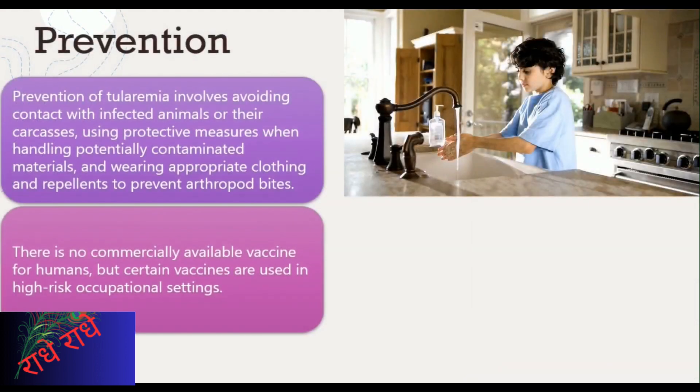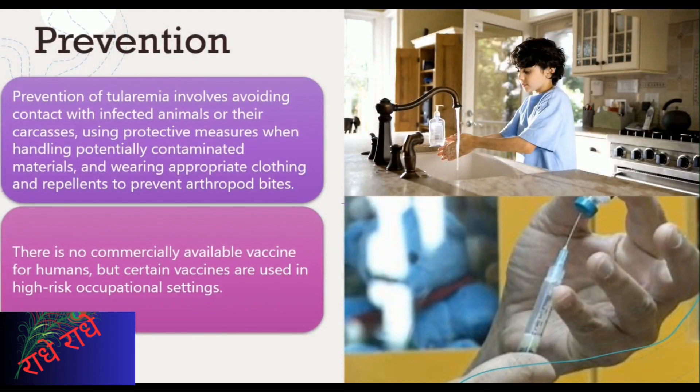Preventing tularemia involves avoiding contact with infected animals, handling potentially contaminated materials with safety measures, and wearing the right attire and using repellents to ward off arthropod bites. Unfortunately, there is presently no commercial vaccine for humans, although certain vaccines are utilized in high-risk working environments.